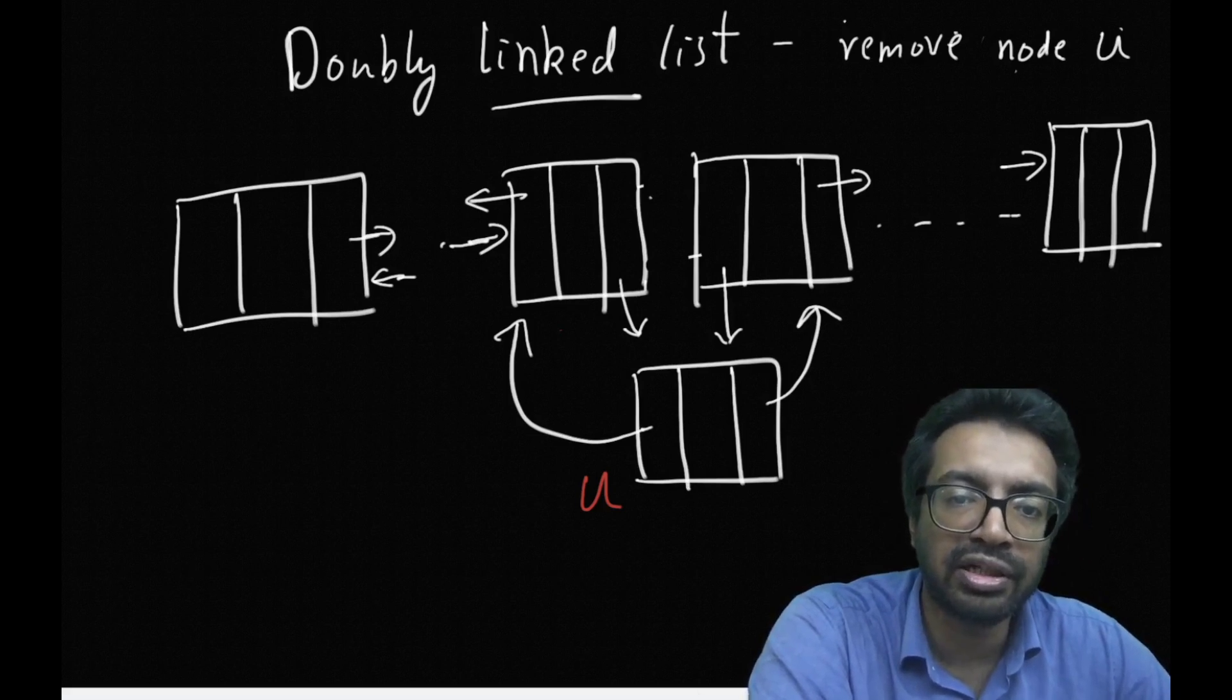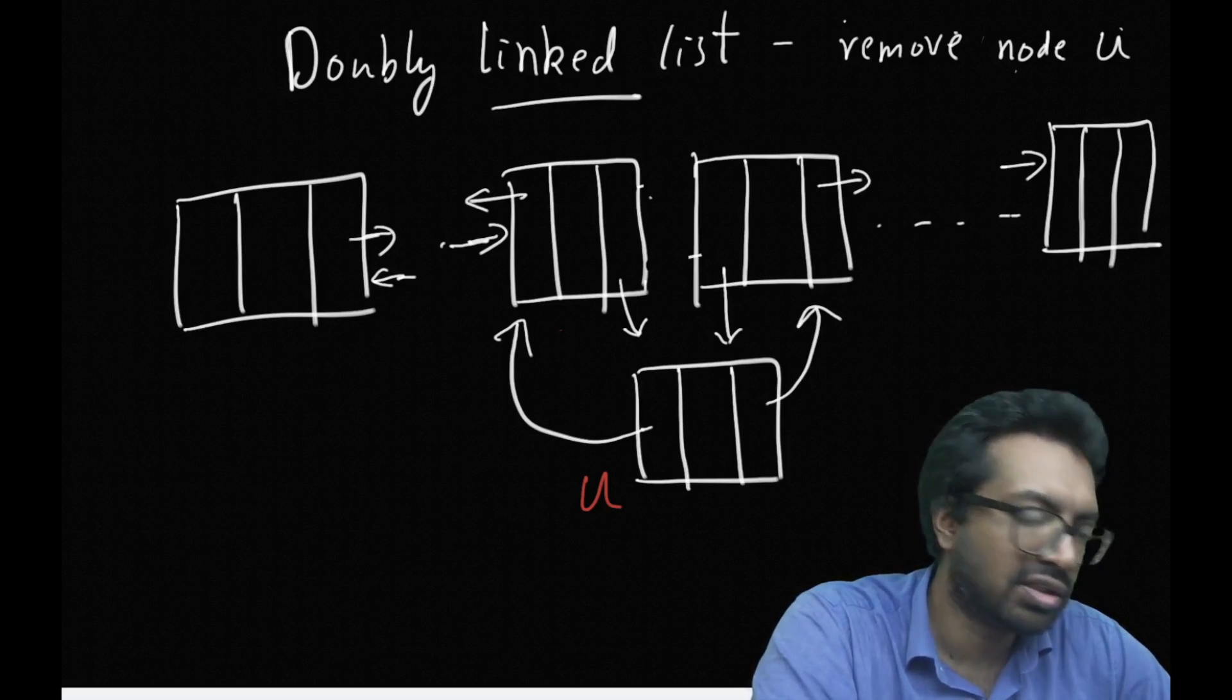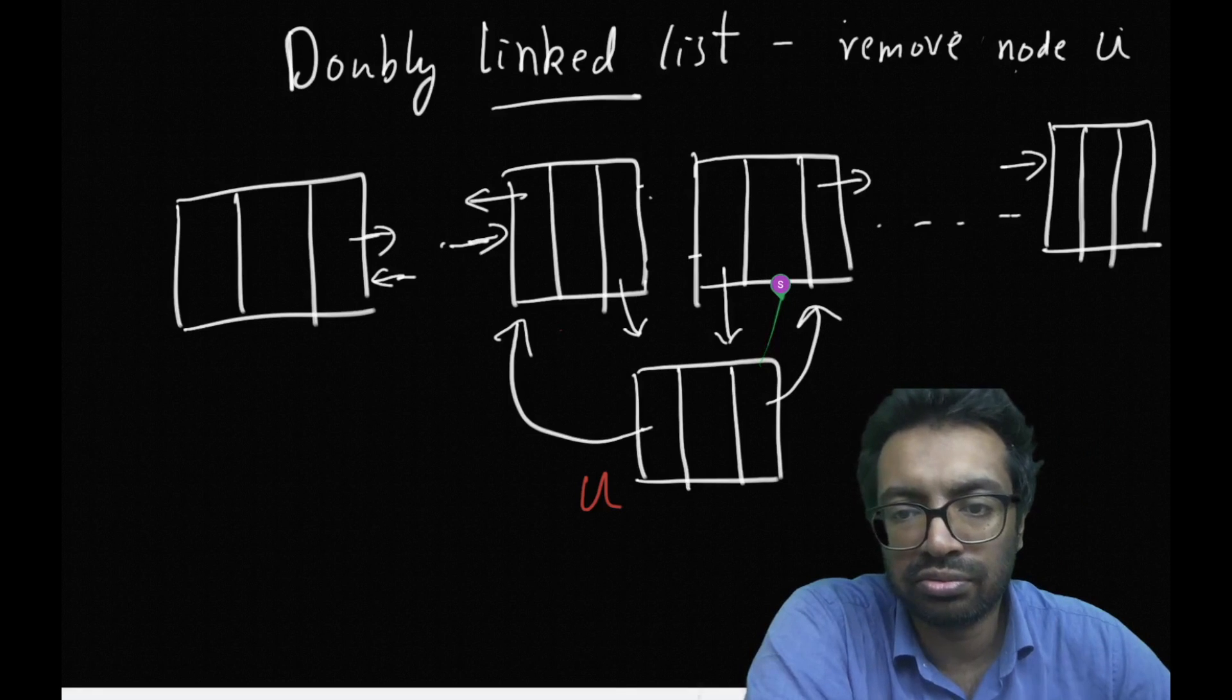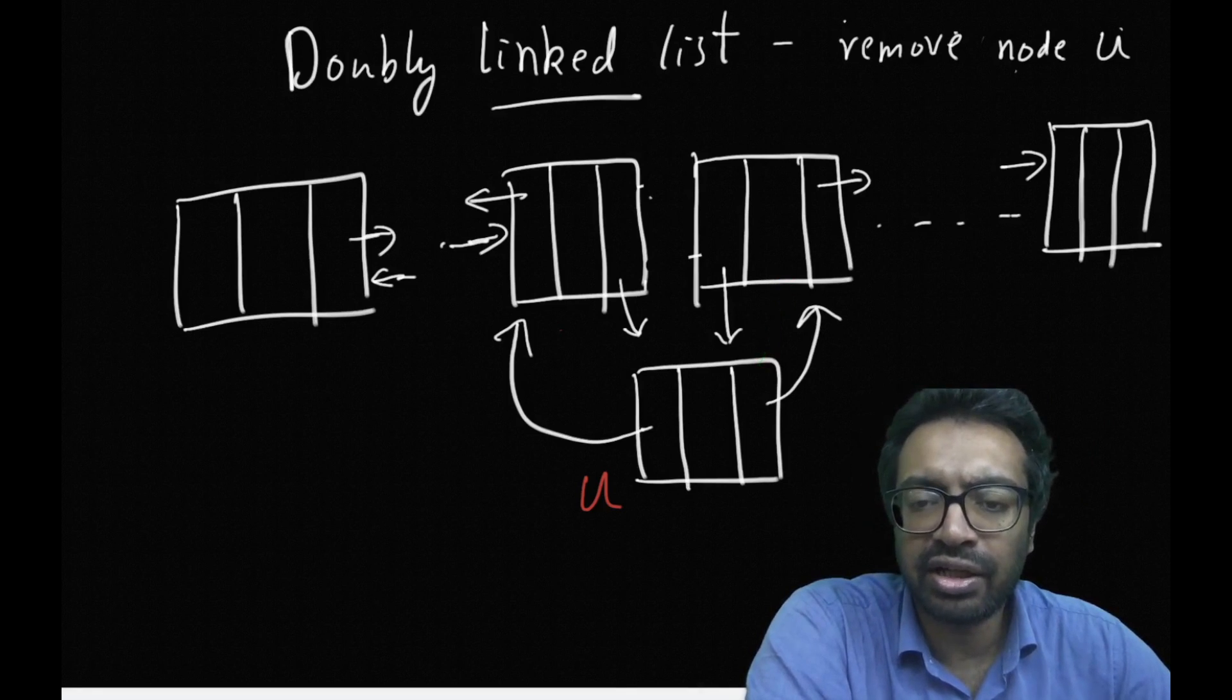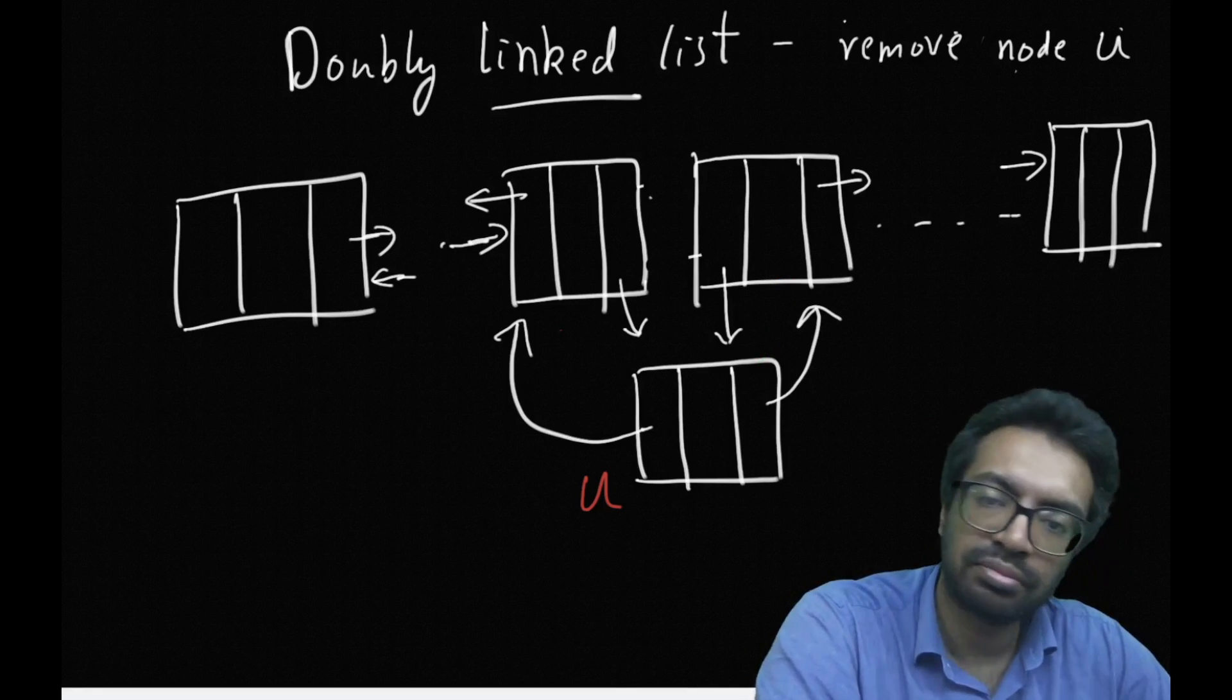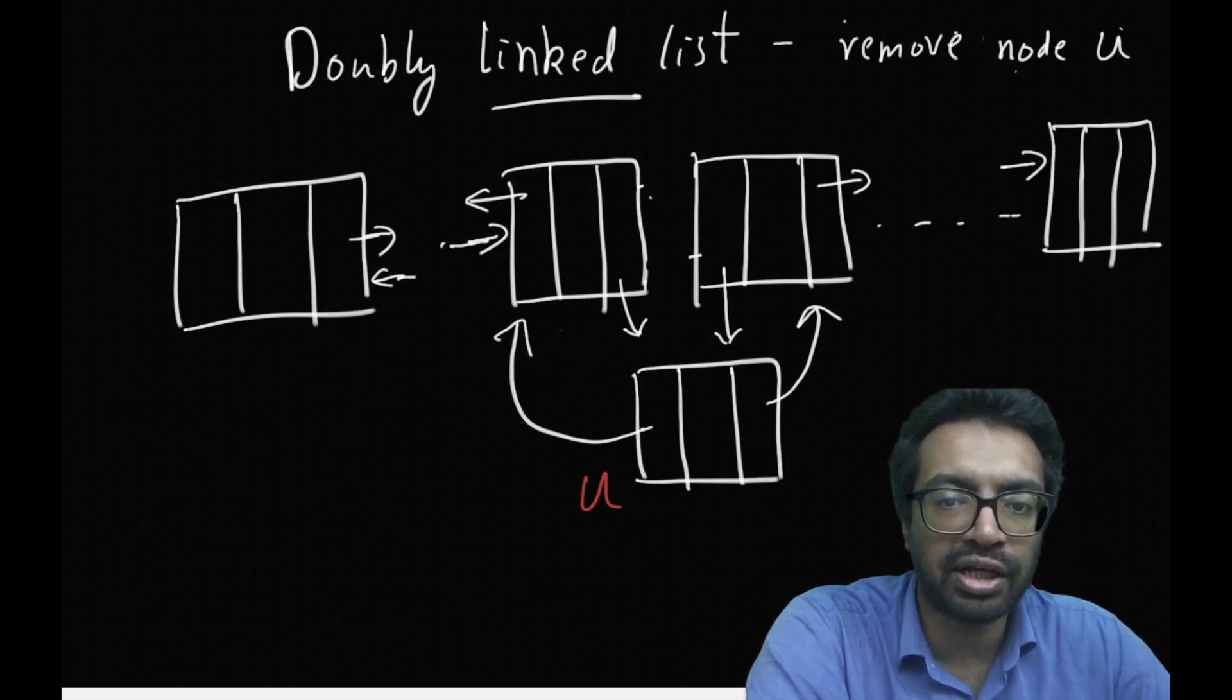Once I have that I keep it aside and I also traverse next to find out the next node. Once I have that I keep that also aside. So now I have the previous node and I have the next node.